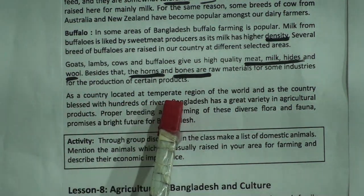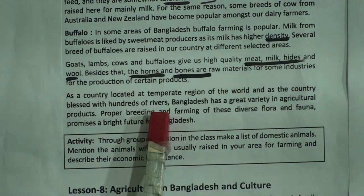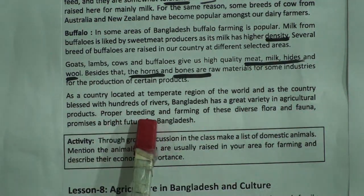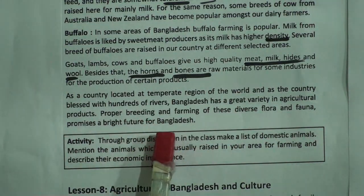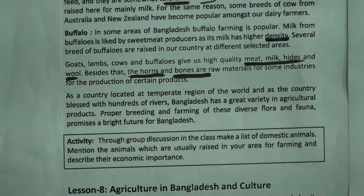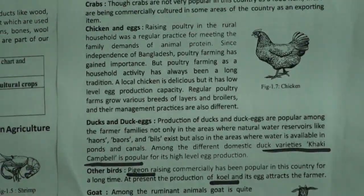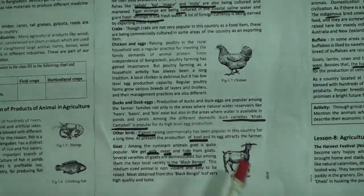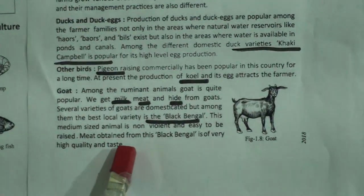As a country located in a temperate region and blessed with hundreds of rivers, Bangladesh has a great variety in agricultural products. Proper breeding and farming of this diverse flora and fauna promises a bright future for Bangladesh, with a huge chance to produce domestic animals, fish, chicken, and more.